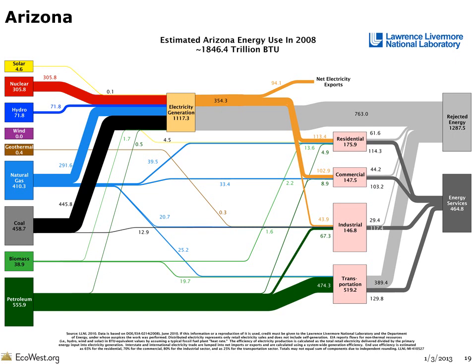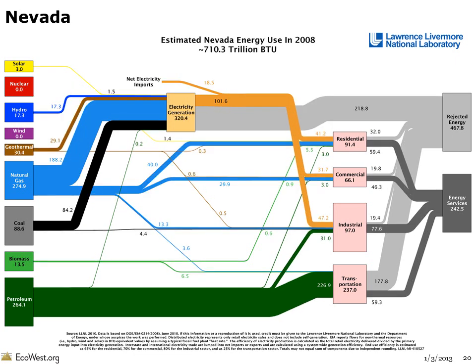In Arizona, the Palo Verde nuclear power plant, the nation's largest, accounts for 27% of the state's electricity generation, although some of that power is exported to places like California. In Nevada, natural gas is the top source for power plants, while geothermal accounts for 9%.